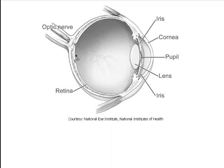As light strikes that surface, it stimulates those cells, and those stimulations pass along the optic nerve, sending the signal to our brains. Our brains are where those signals are interpreted, and we can interpret them as different colors, different shapes, light and dark, things of that nature.